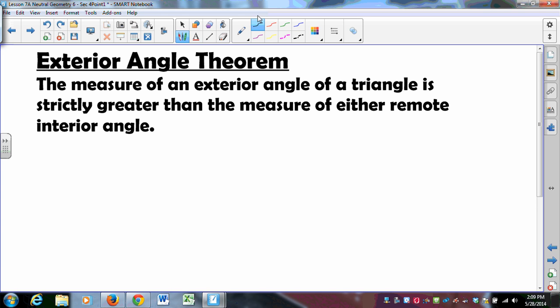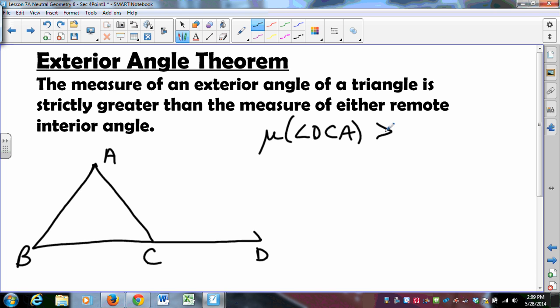We're going to build a triangle. We're going to try this like this. This is going to be ABC. Ray BC has been extended to point D. So, ABC is a triangle. D is a point such that CD is opposite CB. Then what I want to show, I want the measure of angle DCA to be strictly greater than the measure of angle BAC. And I want the measure of angle DCA to be strictly greater than the measure of angle ABC. That's what I want.